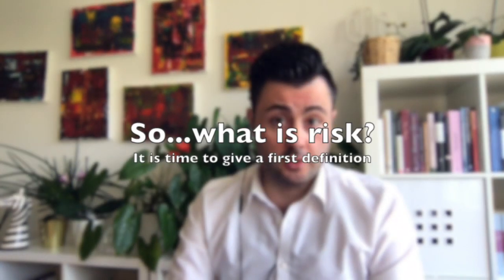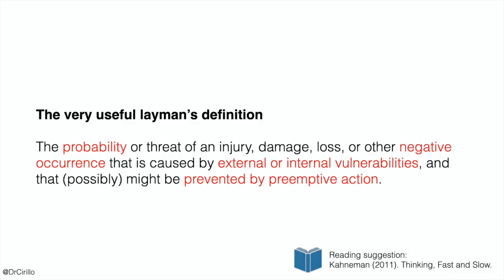In order to deal with risk, we need a definition of risk — we have to answer: what is risk for us? We will see that the more we acquire knowledge about modeling risk, the more precise we can be in defining it, and the proper definition will be given at the end of the course. But we need a starting point. The best way is to start from a layman definition: risk is the probability of an injury, damage, loss, or any other negative occurrence that is caused by external or internal vulnerabilities, and that possibly might be prevented by preemptive action.